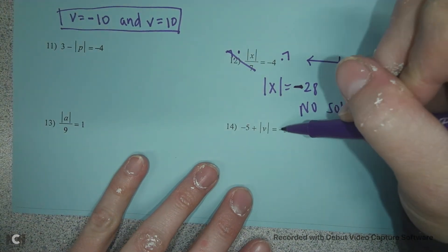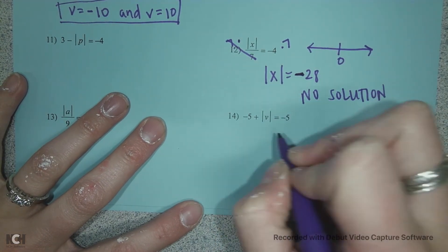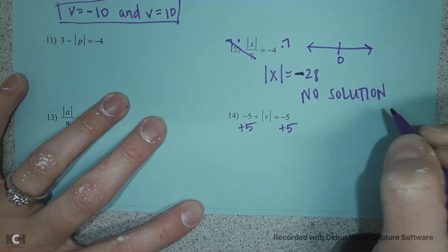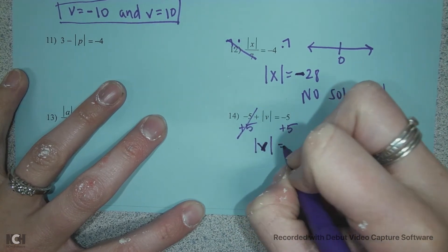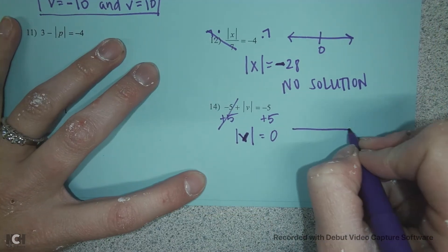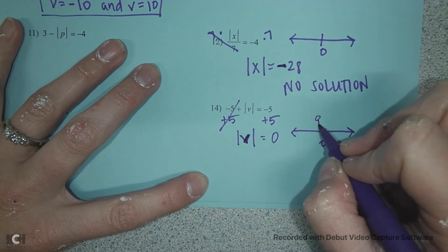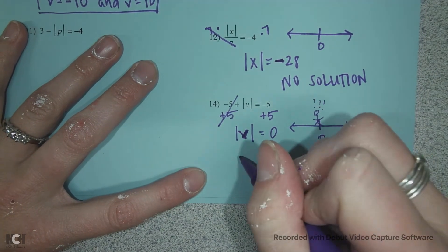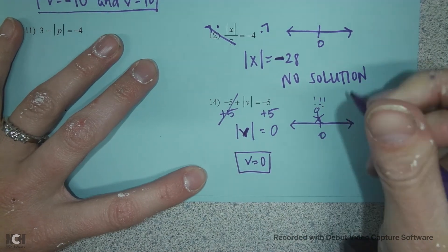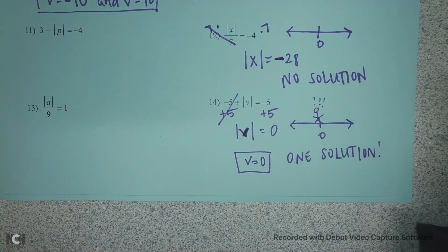Let's try this one — it kind of looks like a no solution, we're just going to wait and see. We're going to get the absolute value by itself, so we do the opposite of minus 5 and add 5 to each side. Now we have the absolute value of v equals negative 5 plus 5, which is 0. I'm standing on my number line, I always start at 0, I'm going to move 0 spaces from 0 — so I just get to hang out here at 0. So my answer will be 0. This is a one solution, because 0 doesn't have a negative or positive version of itself.